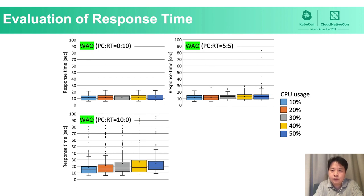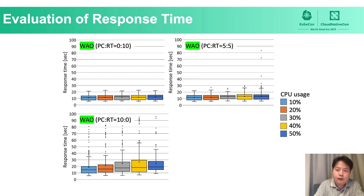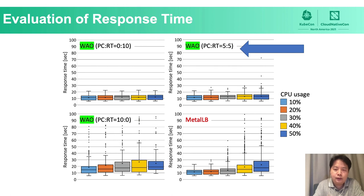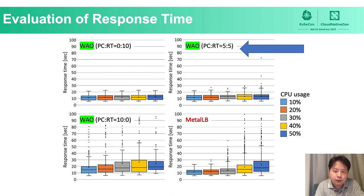We also evaluate WoW in terms of response time, since it doesn't make sense for a cloud edge computing system to only discuss power reductions. Each box plot shows the response time when applying WoW LB with three different priority settings. The vertical axis is response time and the horizontal axis shows CPU usage from 10% to 50%. In most comparison scenarios, WoW LB achieves lower response time for task allocation than Metal LB. In balance mode, it reduces both power consumption and response time compared to default Metal LB. Most importantly, WoW LB supports priority adjustment between power consumption reduction and application response time requirements.